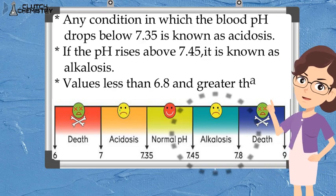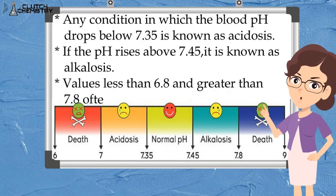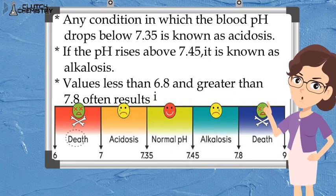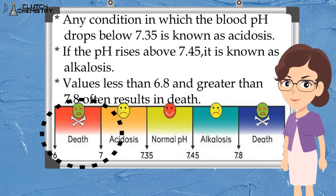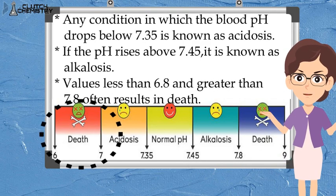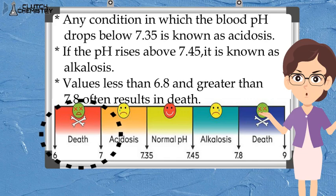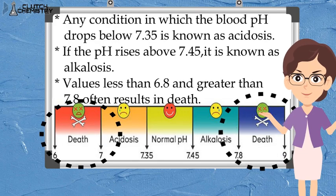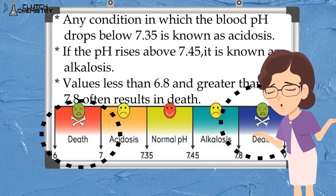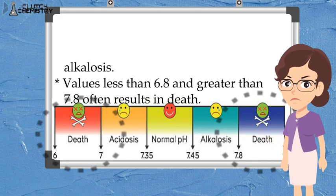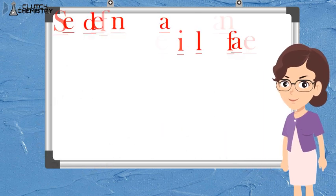Also, if the pH values go further below 7.35 or above 7.45 beyond the safe range, then a person's death can also occur.